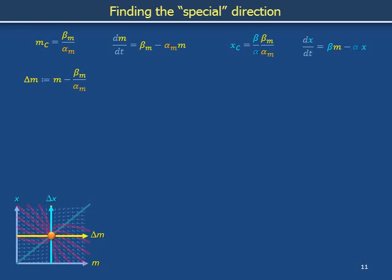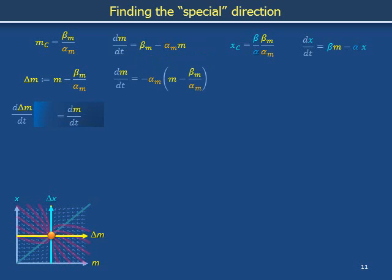Delta m is defined as m minus its critical value beta_m divided by alpha_m. Differentiating both sides, delta m and m have the same time derivative because delta m differs from m by a constant. Factoring out minus alpha_m in the differential equation for dm/dt and recognizing delta m in the parentheses, we write the time derivative of delta m in terms of delta m. The superfluous zero will make sense later.